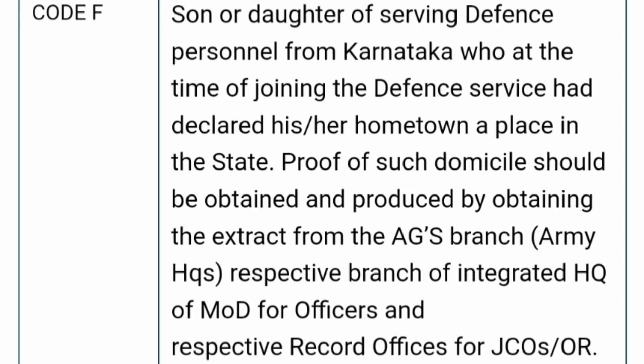Code F is also for the son or daughter of serving defense personnel from Karnataka, where the personnel at the time of joining the defense declared their hometown in Karnataka. Proof of such domicile should be obtained from the AG's branch, respective branches of the integrated HQ of the Ministry of Defense for officers, and respective record offices. If you can produce these proofs, you are a code F eligible candidate.